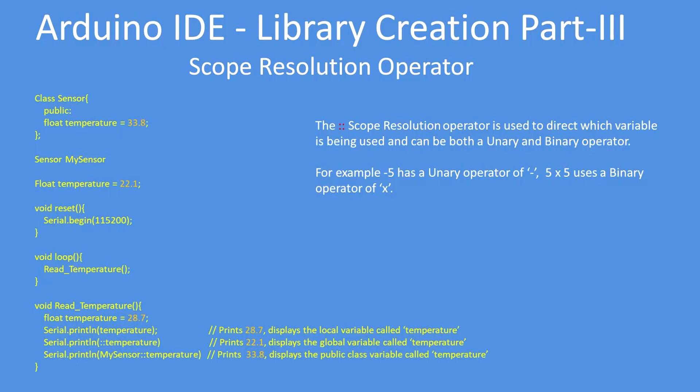In this example I'm going to define three variables each called temperature. One is defined in the class: float temperature equals 33.8. Then there's a sketch global variable float temperature equals 22.1. And then later on within a function there's a local variable called temperature assigned the value 28.7. So how do we use the scope resolution operator?